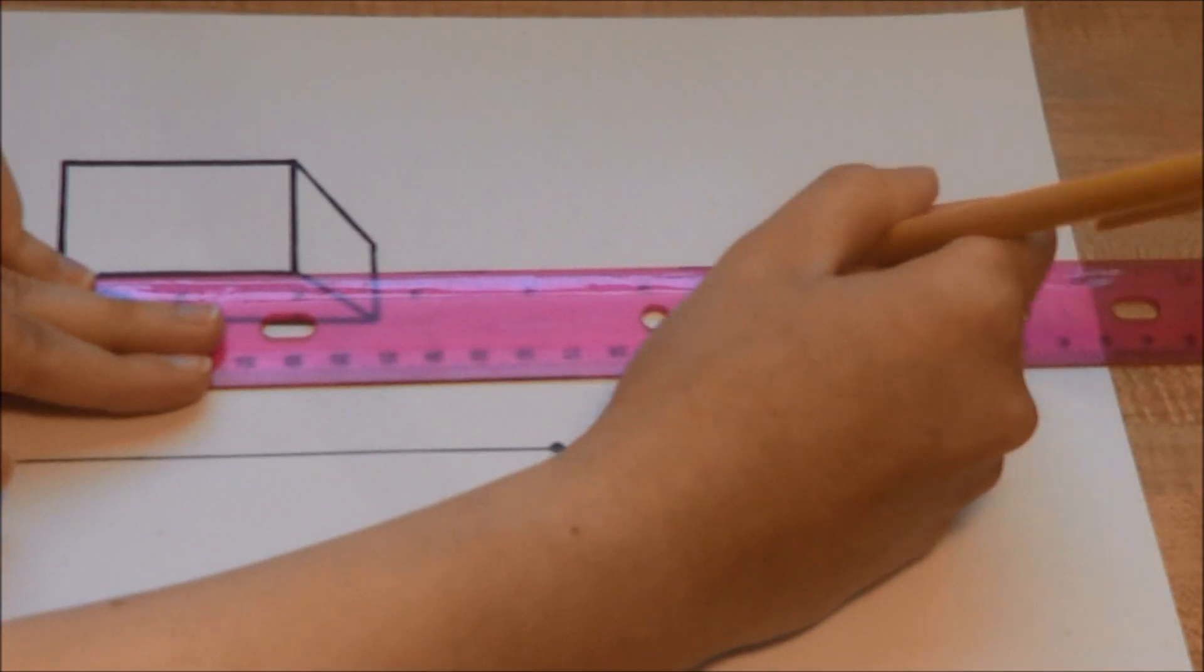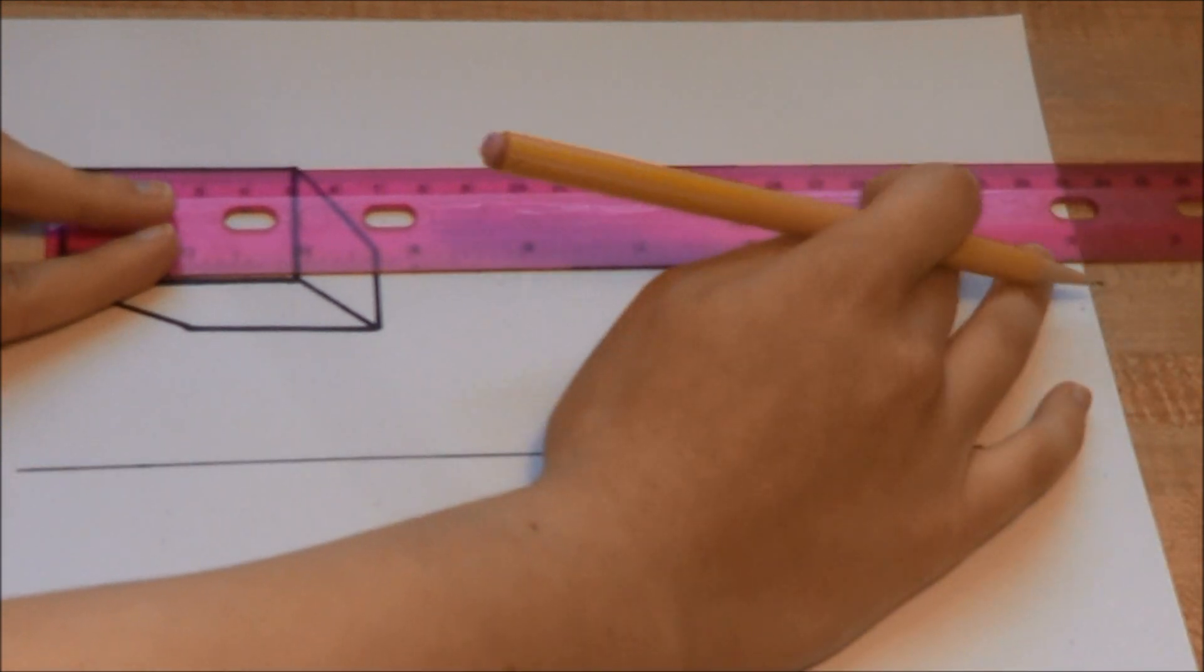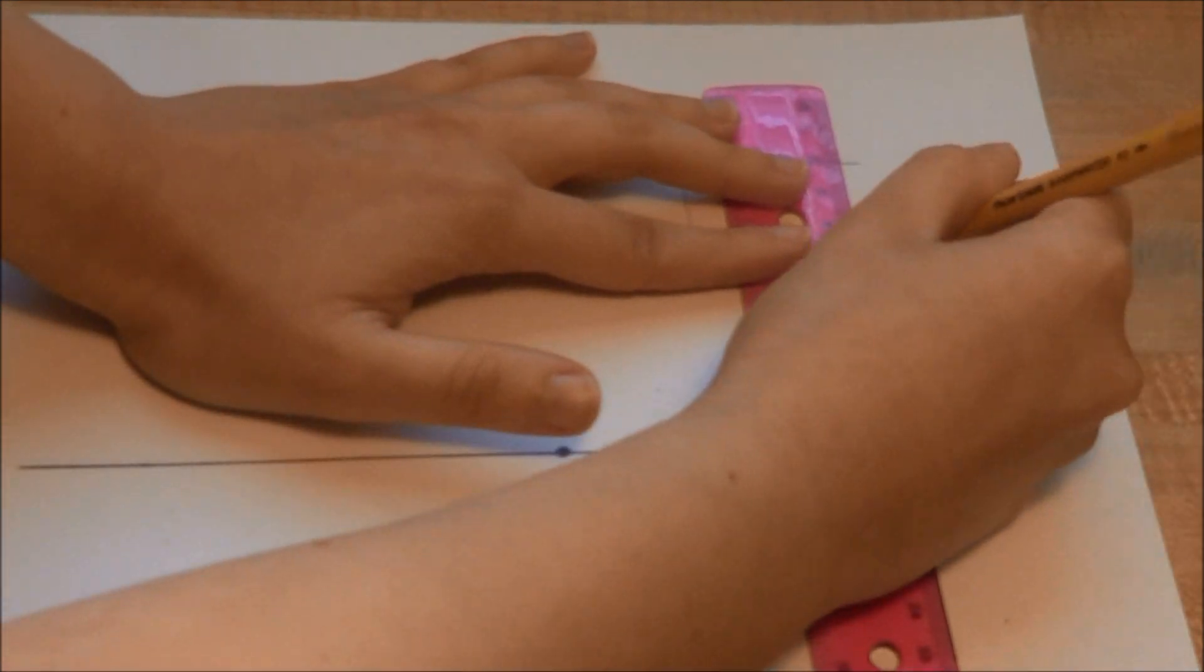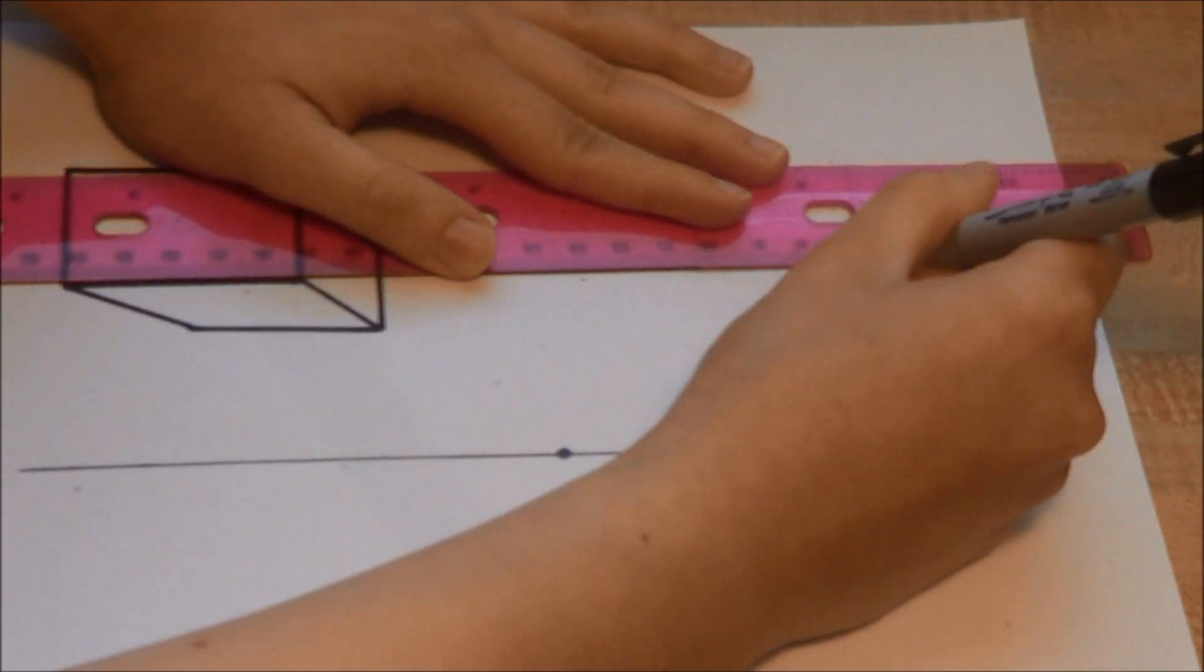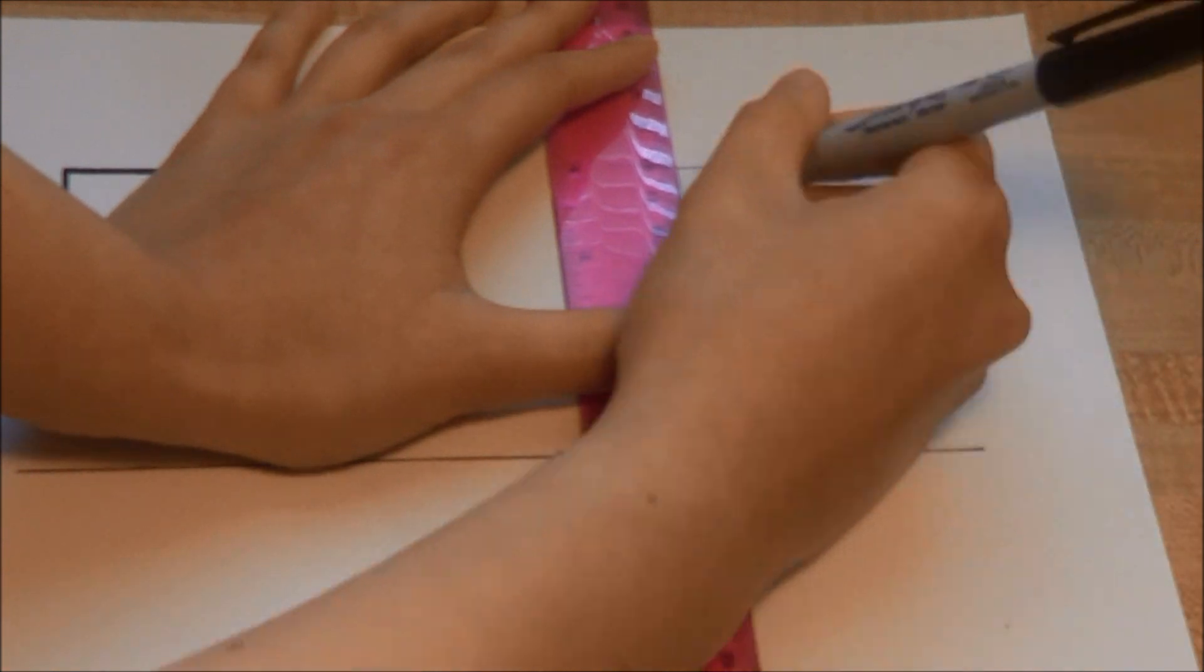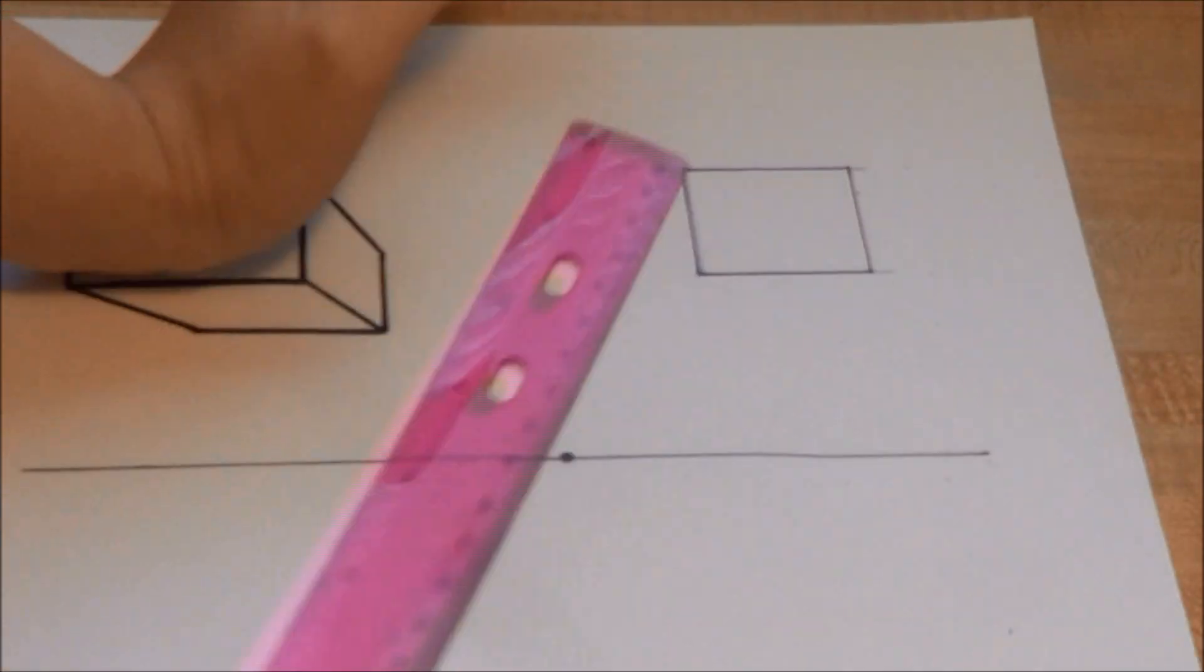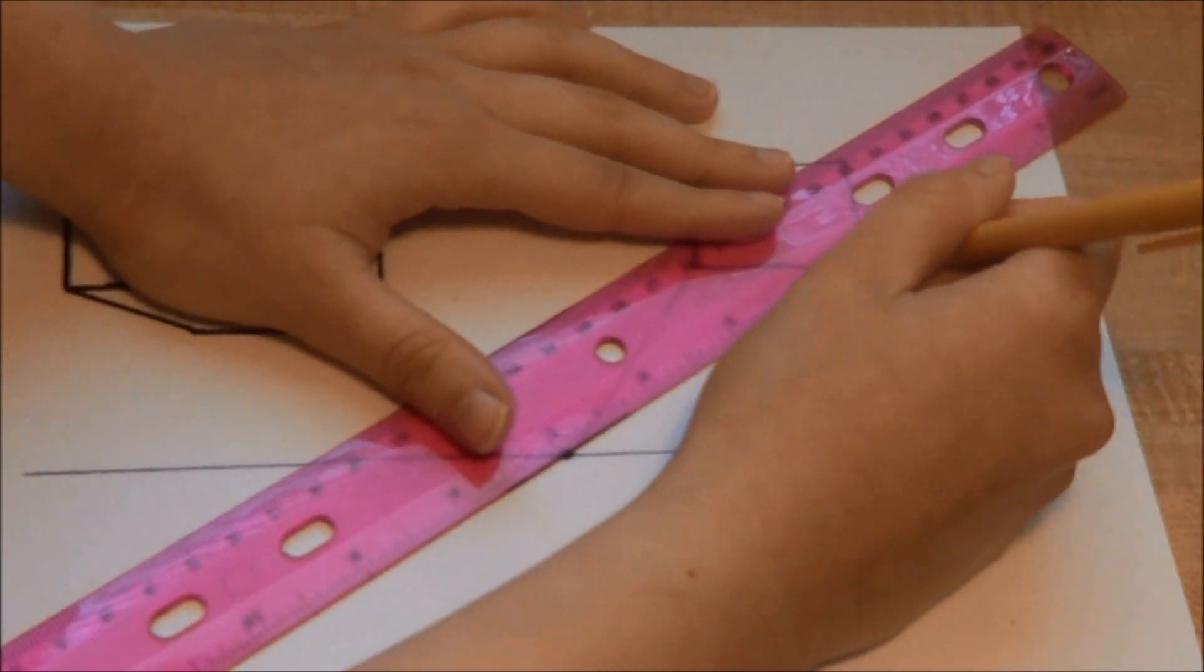I'm going to draw another box on the other side of the paper. This one will look different than the first one. Again, I'll start with a rectangle and then add orthogonal lines to turn it into a rectangular prism.